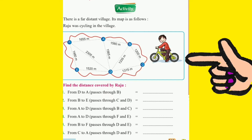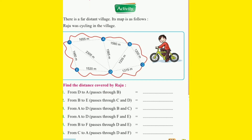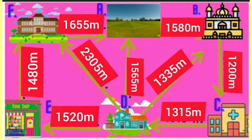Come children, we will do this interesting activity from your book. This is the map of Raju's village. In this, various places are shown and are marked from A to F. The distance between these places is also shown. Raju's father has bought a new cycle for Raju, and Raju daily takes a round of his village.